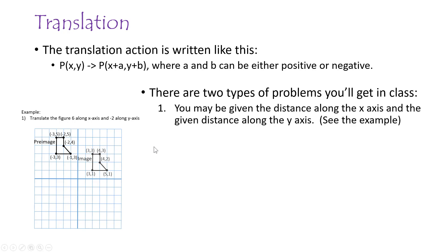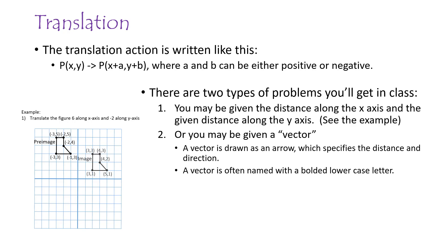Another way you may get a problem in class is being given a vector. A vector is just an arrow that specifies a distance and a direction, and it's often named with a bolded lowercase letter, like vector u. They may say 'translate the figure according to vector u.' For any vector, you figure out how far the arrow goes in the X direction and in the Y direction — that's the X component and Y component. This particular vector u goes 6 in the X direction and -2 in the Y direction, the same as the first example.